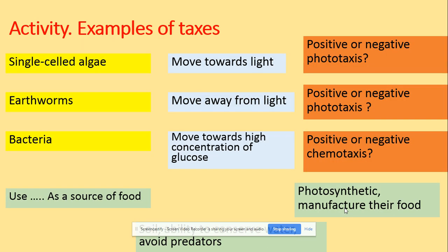In terms of taxis, we have a few examples. Single-cell algae move towards light — this is positive phototaxis. Earthworms move away from light — this is negative phototaxis. Bacteria move towards a high concentration of glucose — this is positive chemotaxis. The algae move towards light because they are photosynthetic and need to produce food. Earthworms move away from light to avoid predators.